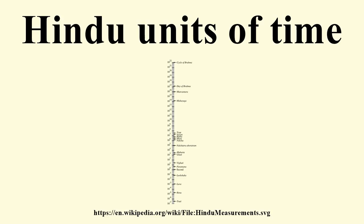The Vishnu Purana's time measurements section — Book One, Chapter Three — explains the above as follows: Two Ayanas equals one human year or one day of the Devas. 4,000 + 400 + 400 = 4,800 divine years equals one Satya Yuga. 3,000 + 300 + 300 = 3,600 divine years equals one Treta Yuga. 2,000 + 200 + 200 = 2,400 divine years equals one Dvapara Yuga. 1,000 + 100 + 100 = 1,200 divine years equals one Kali Yuga.